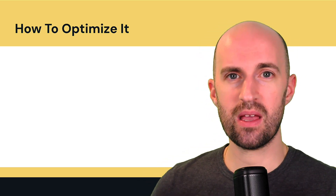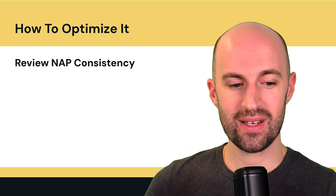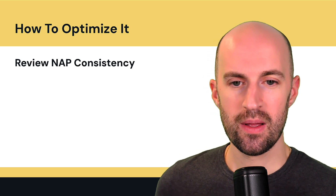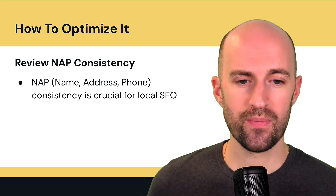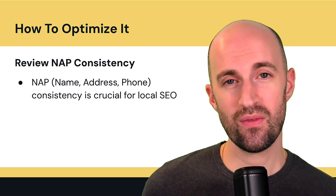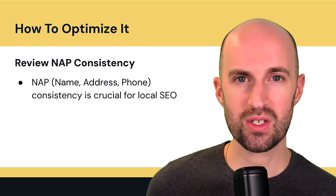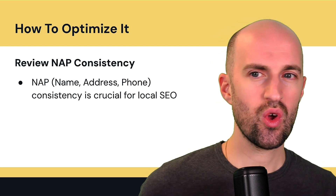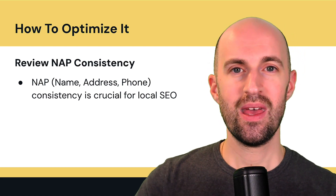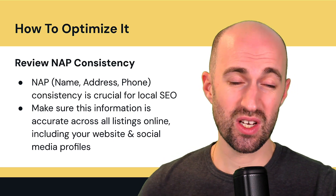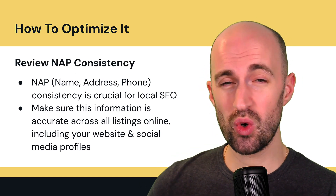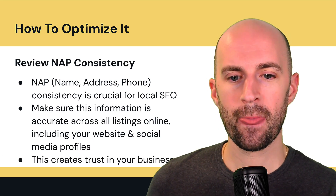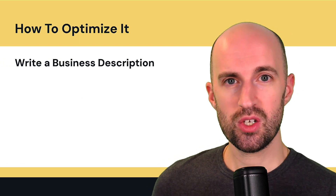Now let's talk about how to optimize your profile. First, review NAP consistency — NAP stands for Name, Address, Phone number. It's crucial for local SEO because inconsistencies create confusion and distrust, both for potential customers and for Google. If one piece of information differs across listings — whether it's a phone number or address — it undermines credibility. So it must be the same and consistent everywhere.